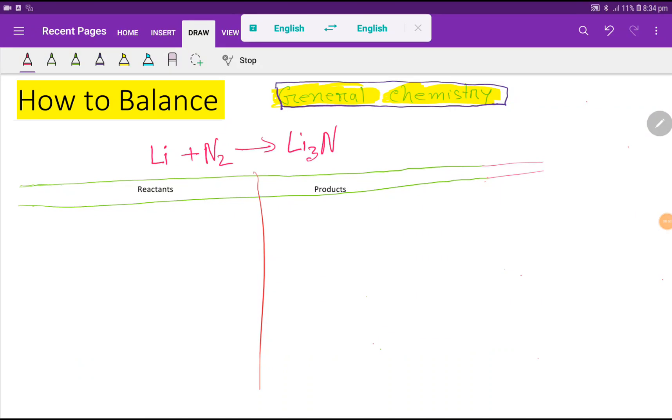Welcome to this class. Today we are going to balance this reaction. Look, this is lithium, this is nitrogen, and this is lithium nitrite. Okay, to balance this reaction, at first we have to draw a table like this.